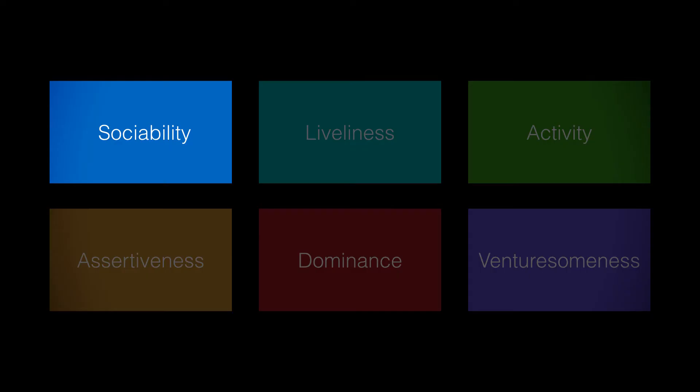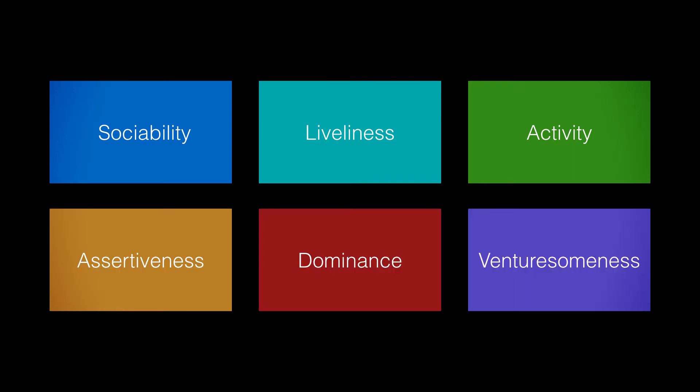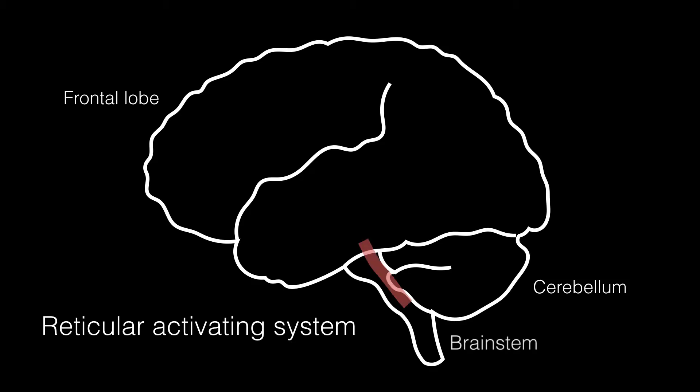People high in extroversion are characterised by sociability, liveliness, activity, assertiveness, dominance and venturesomeness. Eysenck theorised that those higher in extroversion had lower levels of spontaneous cortical arousal in the reticular activating centre of the brainstem, and so sought excitement to increase their arousal levels to what would be normal for a person with a lower level of extroversion. Eysenck once believed criminals to be higher in extroversion than non-offenders, but later revised that view.